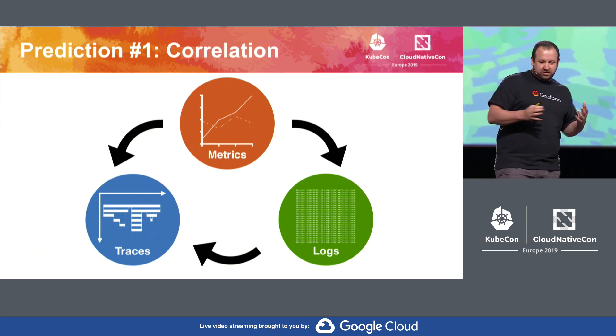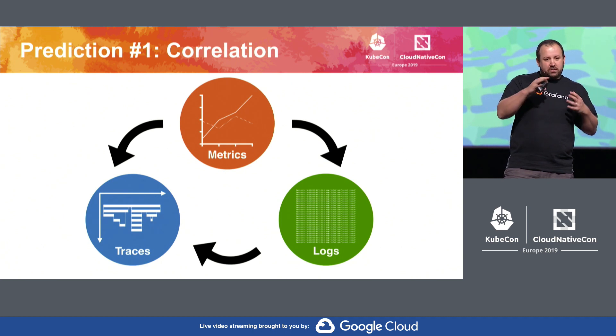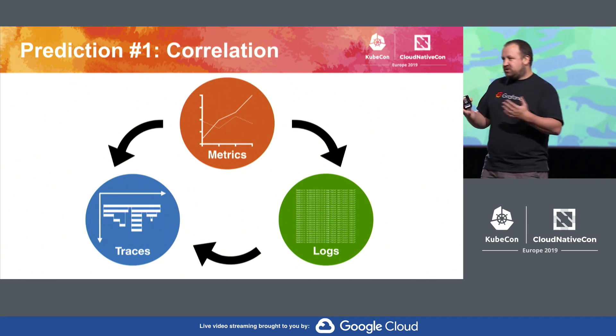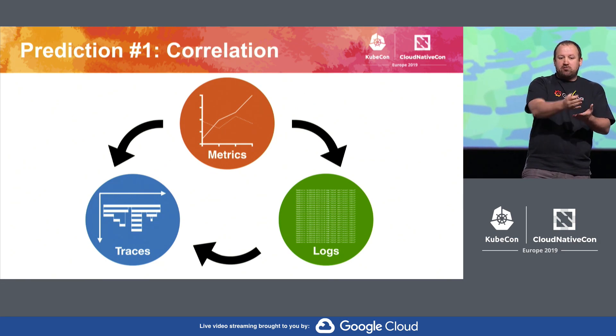Metrics, logs and traces. The three examples I've got are: being able to look at a graph of your server latency and instantly switch to the logs relevant for that service. The second example would be when looking at those logs, finding the slowest query that's causing a peak in latency, and being able to instantly jump to the trace for that request to see where it spent time throughout your architecture.